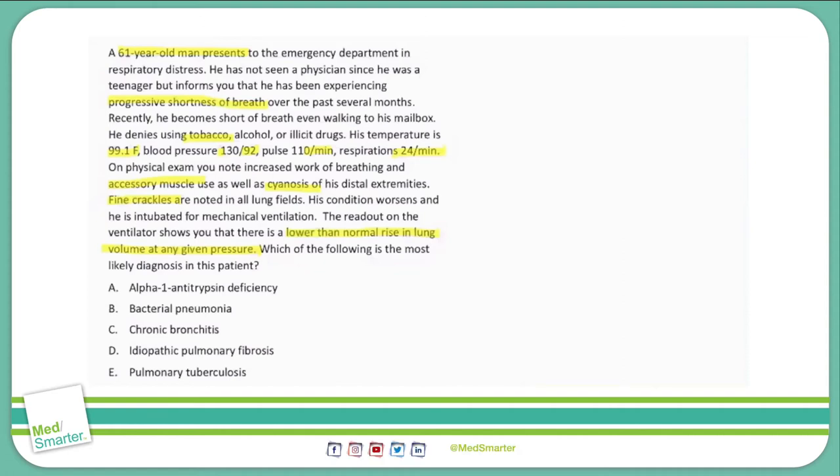C, chronic bronchitis. As we mentioned with answer choice A, chronic bronchitis is a type of COPD, and COPD causes an increase in compliance. So we know that for that reason, it can't be the answer.